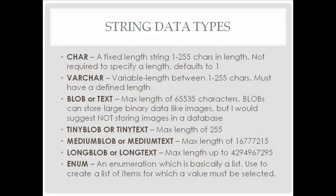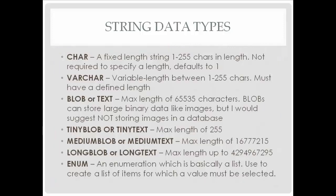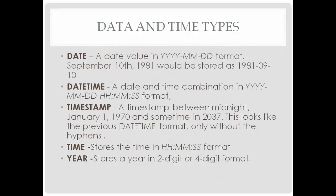TINYBLOB and TINYTEXT have a max length of 255 characters. MEDIUMBLOB and MEDIUMTEXT have a larger max length, and LONGTEXT and LONGBLOB support very large amounts of data. ENUM (enumeration) is essentially a list — it's used to create a list of items from which a value must be selected. That covers string data types.